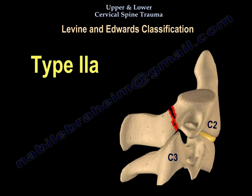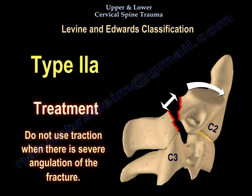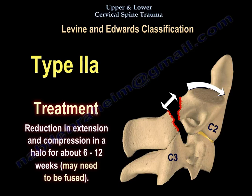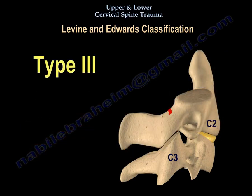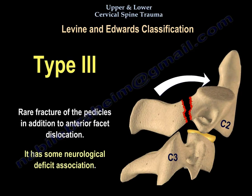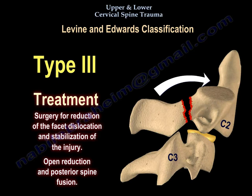Type 2A has severe angulation with little translation because the posterior longitudinal ligament is disrupted. You cannot treat that by traction because you will pull the spinal cord apart. So you treat it by extension and halo in compression for about 6 to 12 weeks, and you may need to fuse that. Type 3 is a surgical type — a fracture of the pedicles in addition to facet dislocation. It has neurological deficit association and the treatment is surgery: open reduction and posterior spine fusion.